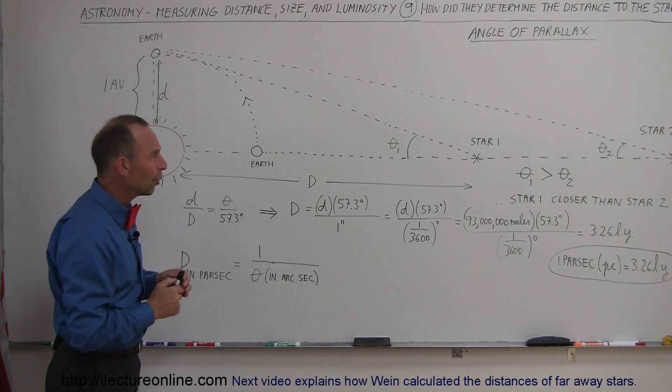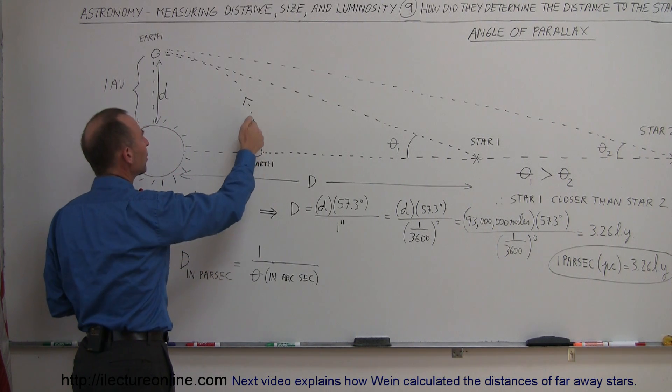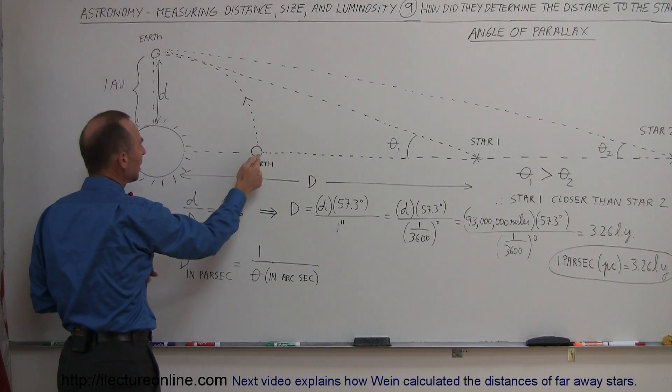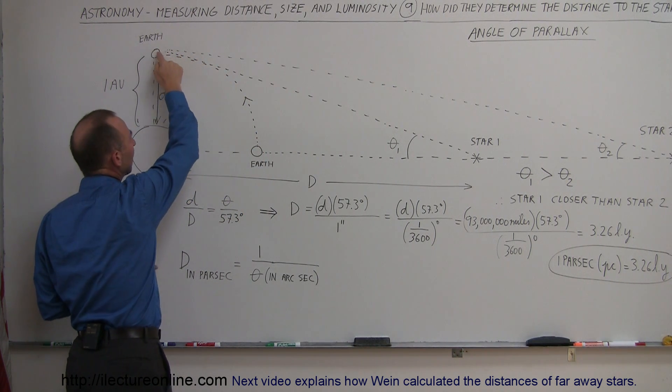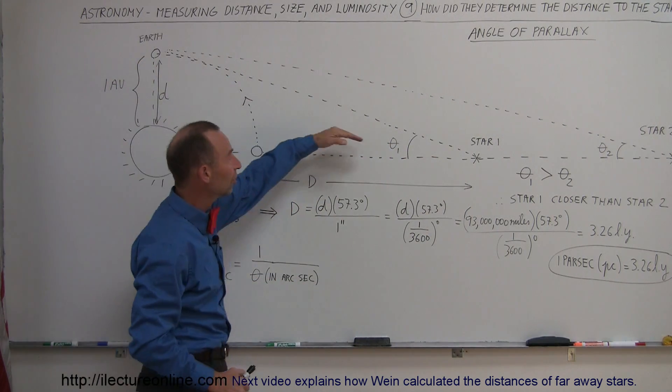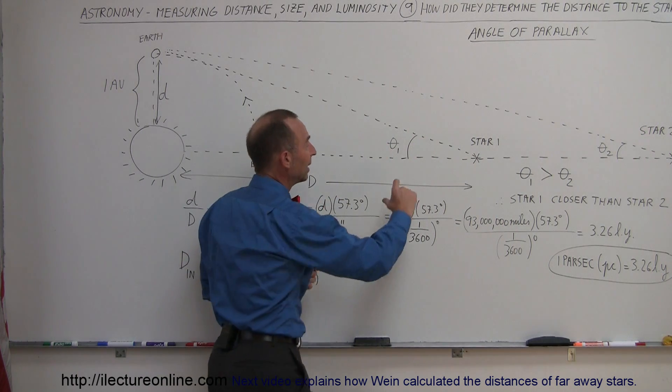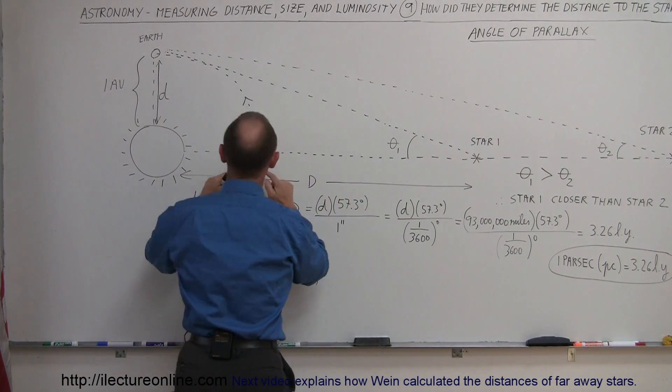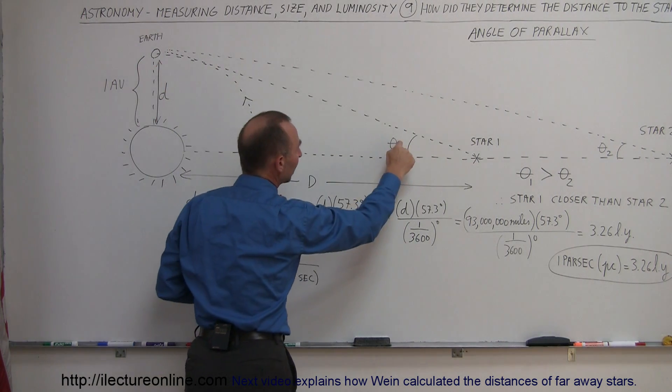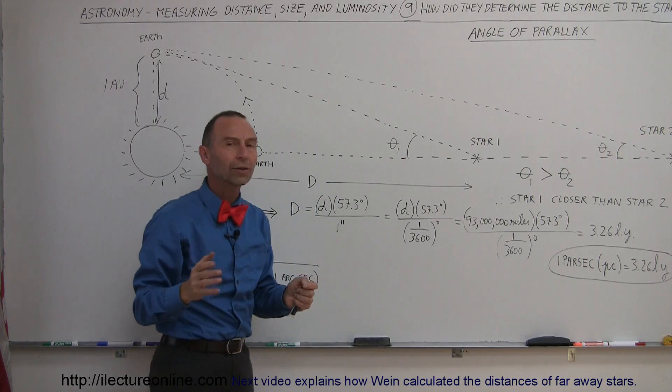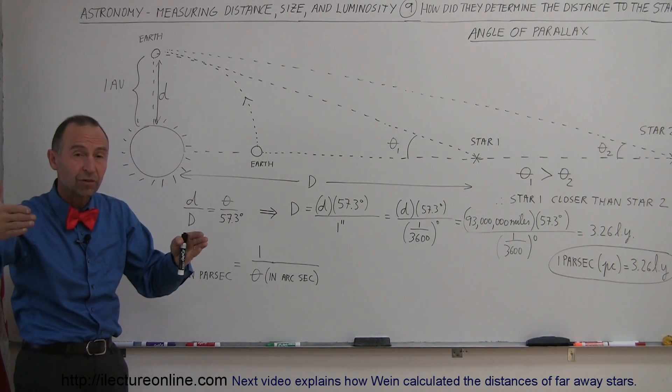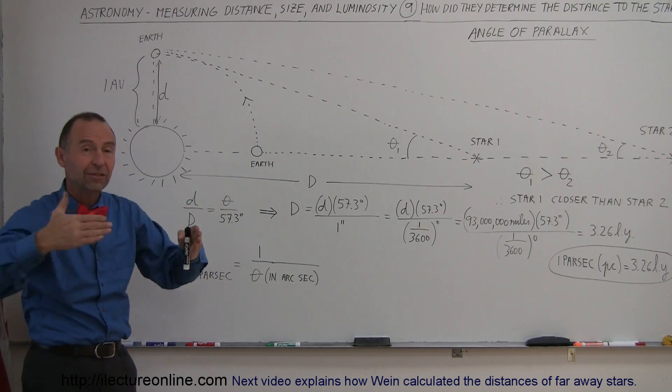So what happened though is that when they observed this very same stars, let's say three months later when the Earth had moved to a different position over here, again being one astronomical unit away, they would then look at the same two stars. But notice now they would have a different position in the sky relative to each other, and they would be able to measure this difference in the angle between seeing the star from this position and seeing the star from that position. They would be able to measure these angles right here. Those angles are called the angles of parallax by looking at the same object from two different positions.